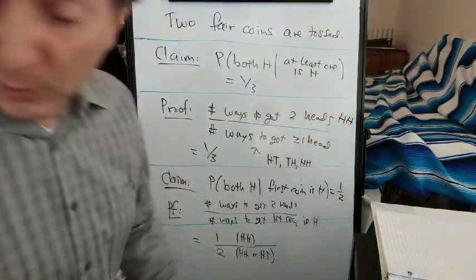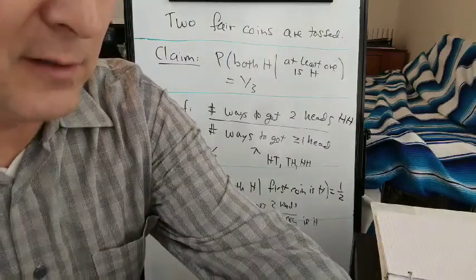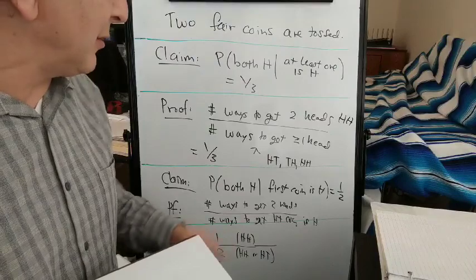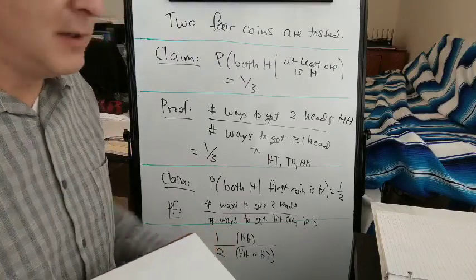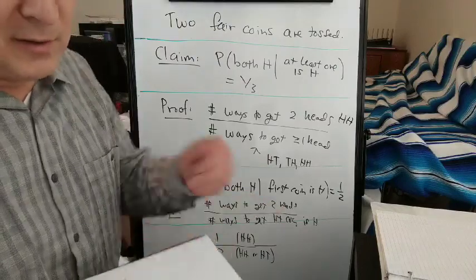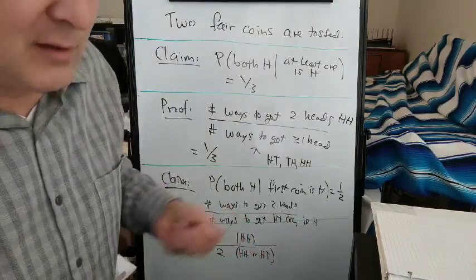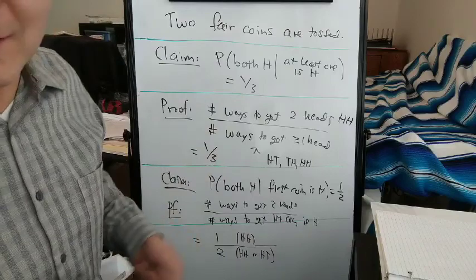But let's do it with coins and see if I can convince you that something is a little counterintuitive. Alright, so I've got two coins here. Flip them. I've got two tails. Let me try again because this won't work unless I get at least one head.